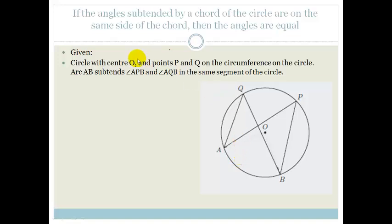So the proof says given circle with center O, there's your circle O. Points P and Q are on the circumference. Arc AB subtends angle APB and angle AQB in the same segment.